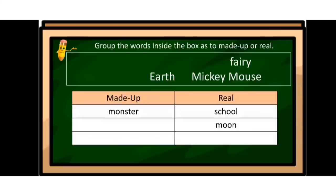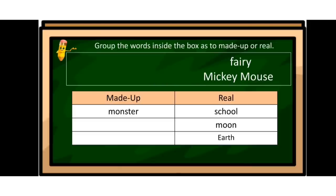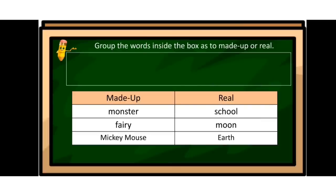How about the word moon? It is also real. Now the word earth — is it made-up or real? It is real. What about the word fairy — is it made-up or real? It is made-up. And last one, Mickey Mouse — is Mickey Mouse made-up or real? Of course, it is made-up.